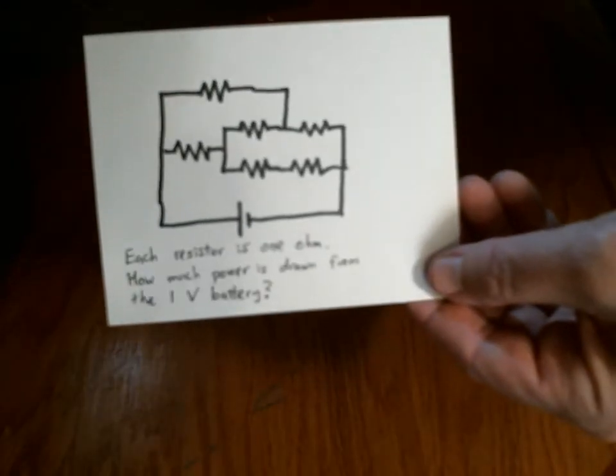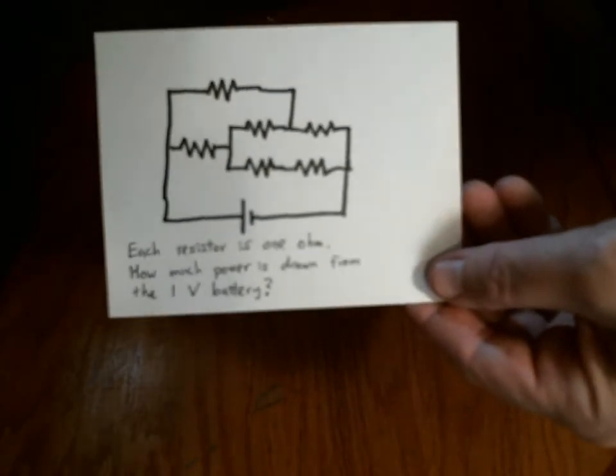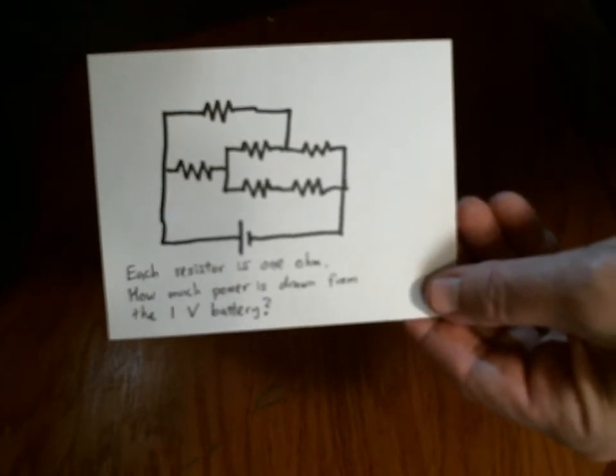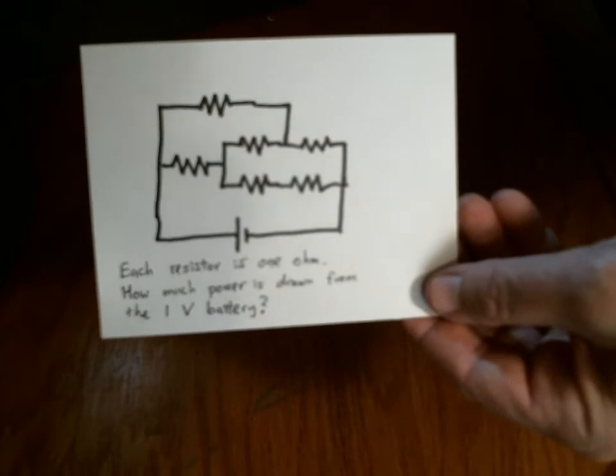Part one of this lab, which is a separate video, was meant to be the easiest possible lab to verify the loop rule and the junction rule. This is part two, which is harder.